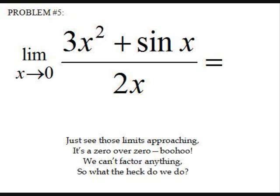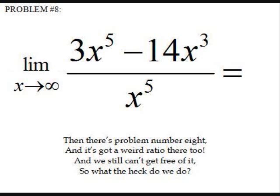Just see those limits are approaching, it's a zero over zero move. And we can't factor anything, so what the heck do we do? Then there's problem number eight, it's got a weird ratio there too. And we still can't get free of it, so what the heck do we do?